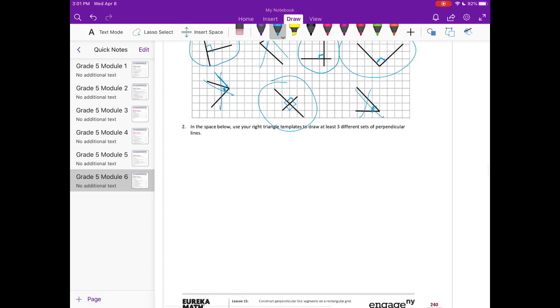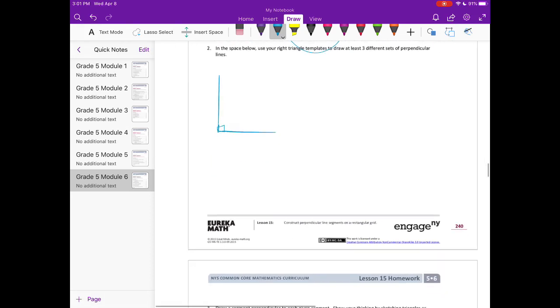Number two, in the space below, use your right triangle templates to draw at least three different sets of perpendicular lines. So maybe you're like me and don't have a right triangle template. So use like what we just talked about, like the corner of a piece of paper or your ruler. I'm just going to set my ruler down. Draw a line on one side and the other, then connect them.